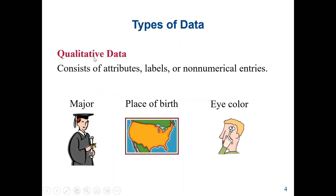Qualitative data normally consists of attributes, labels, or non-numerical entries. In qualitative data, we cannot perform arithmetic operations except counting. An example would be a major, place of birth, eye color, or last name.